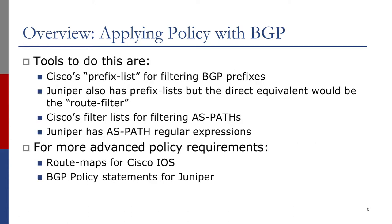To filter prefixes, Cisco has a prefix list and the Juniper equivalent is the route filter. Huawei and other vendors also have particular tools that they will use to filter BGP prefixes.